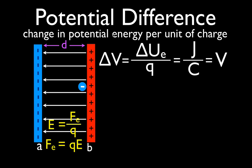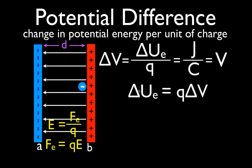This is the definition written out in words and as an equation. This is a very important equation to remember. For AP physics, this equation is on your equation sheet — written as the change in electric potential energy equals the amount of charge times the potential difference through which that charge is moved. So if we take this charge and move it from the positive plate to the negative plate, we apply a force over a distance and move that charge through that potential difference to get the change in electric potential energy.